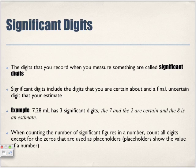Significant digits. Hopefully we'll be able to clear any problems we may have had on significant digits from the physics component. The digits that you record when you measure something are called significant digits. Significant digits include the digits that you are certain about and a final uncertain digit that's your estimate.